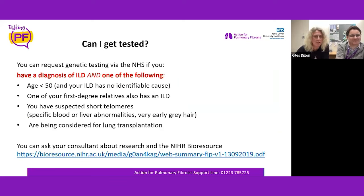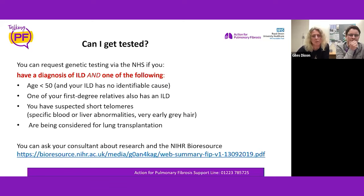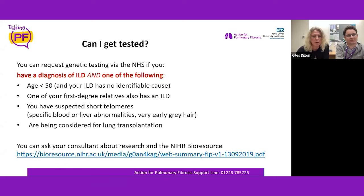You can get tested through the NHS if you already have a diagnosis. Criteria include: diagnosed below age 50, a first-degree relative such as a parent or sibling also having an ILD, a suspected short telomere disorder, or being considered for a lung transplant. There's also an NIHR research study looking at short telomeres and familial pulmonary fibrosis with a link available. Genetic testing has only been available since summer of last year.